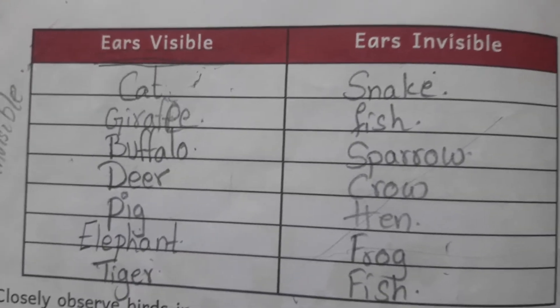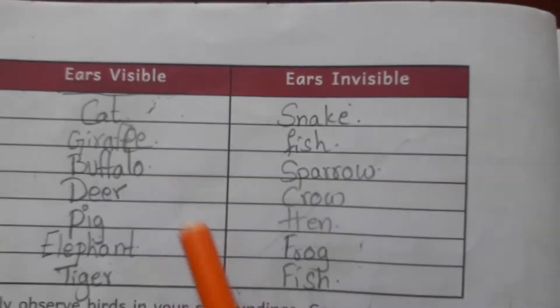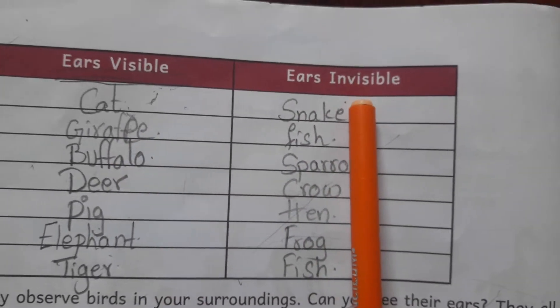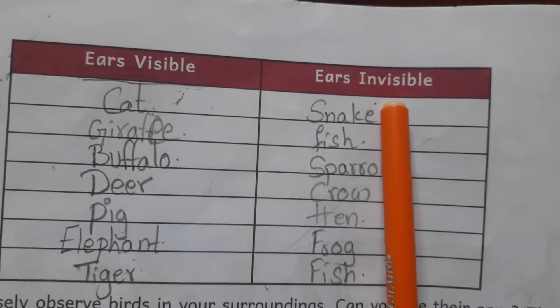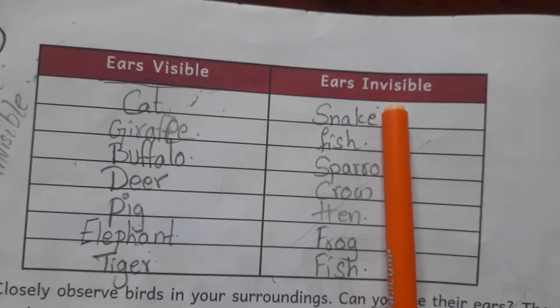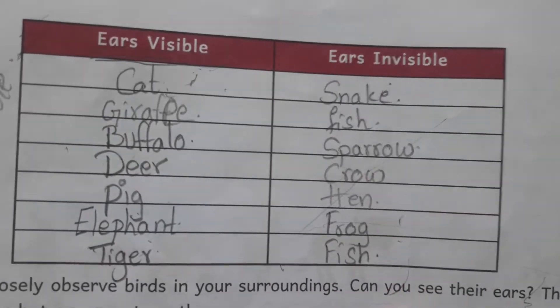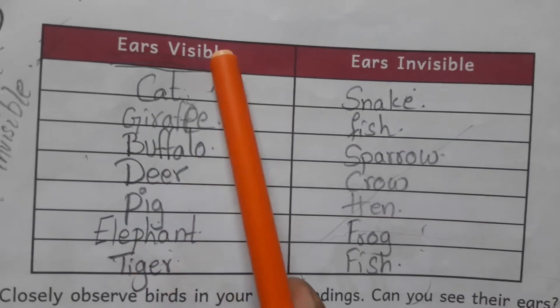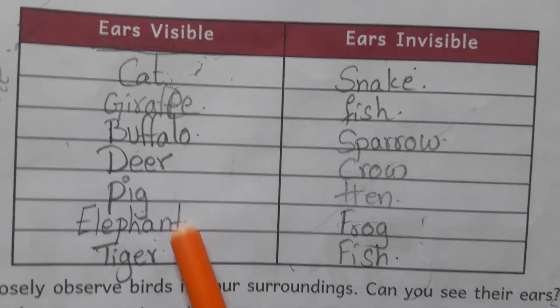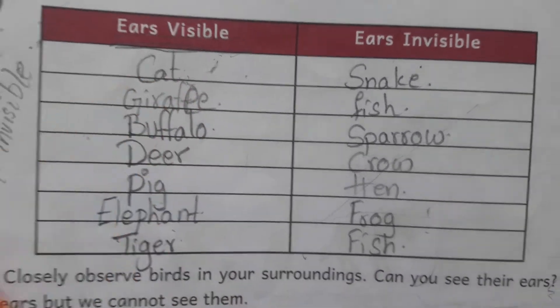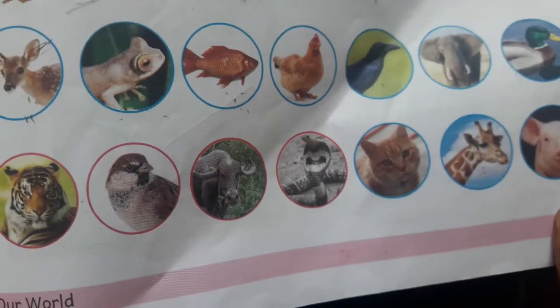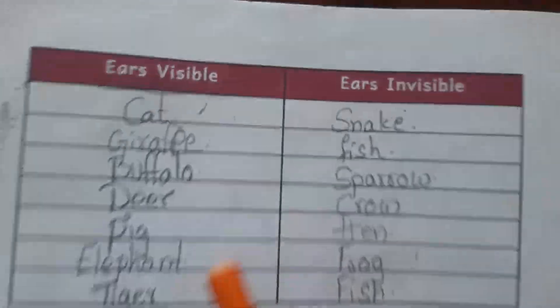See, here one table is there. Observe the table. Ears visible, ears invisible — invisible means kanipinchani, which we cannot see. Write all animals whose ears are not visible in one column, and animals whose ears are visible in another column.